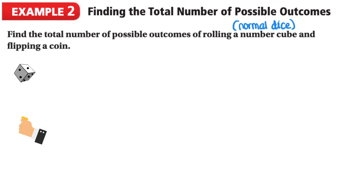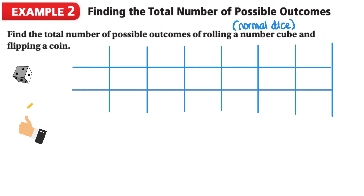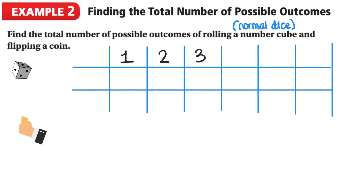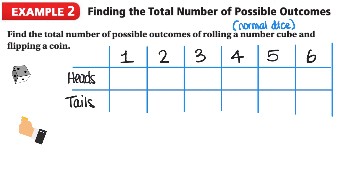On the top of the table, we can write the possible outcomes when we roll a dice: one, two, three, four, five, and six. And on the side, we can write the possible outcomes when we flip a coin — heads or tails. We're going to use H to represent heads and T to represent tails.